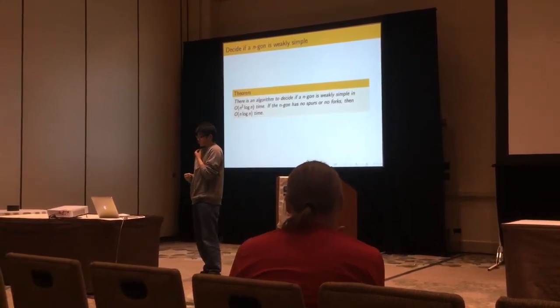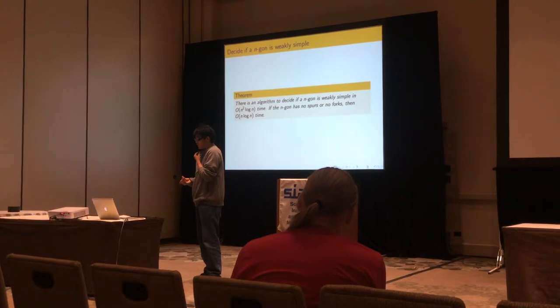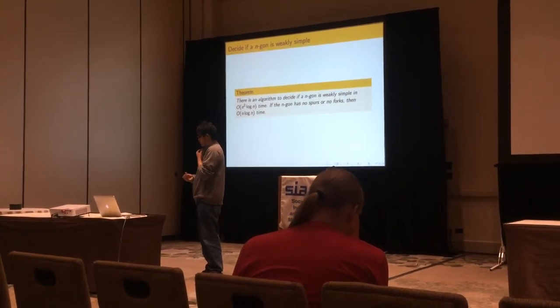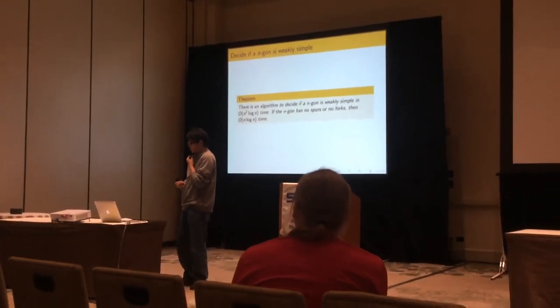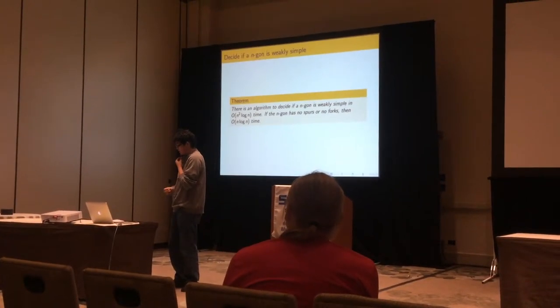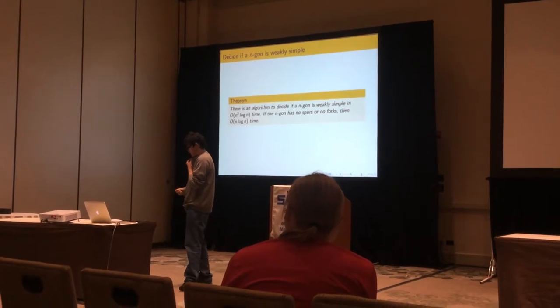So we have an algorithm that decides if an n-gon is weakly simple in O(n squared log n) time. And if the n-gon has no spurs or forks, or no forks, then we can go faster in O(n log n) time.